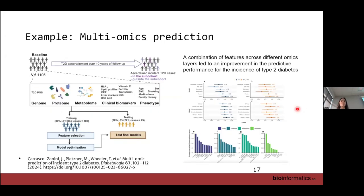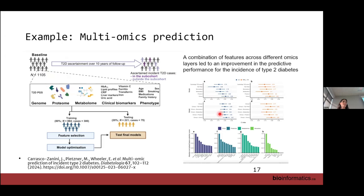Another example is using multi-omic data for prediction with machine learning — a concatenation model approach. Patients were measured at baseline and followed to see how many developed type 2 diabetes. Using baseline data — the genome, proteome, metabolome, clinical data, and phenotype data — they tried to predict who would develop type 2 diabetes. They found a group of different omic features that was good at predicting who would develop the disease.